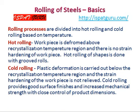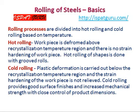The rolling process can be categorized into two types based on the temperature of rolling: hot rolling and cold rolling. In the hot rolling process, the workpiece is deformed above the recrystallization temperature, and there is no strain hardening of the workpiece — the induced strain is annihilated because recrystallization occurs. Hot rolling of shapes is done with grooved rolls. In the cold rolling process, plastic deformation takes place below the recrystallization temperature, and the strain hardening which takes place during rolling remains; it does not get relieved.